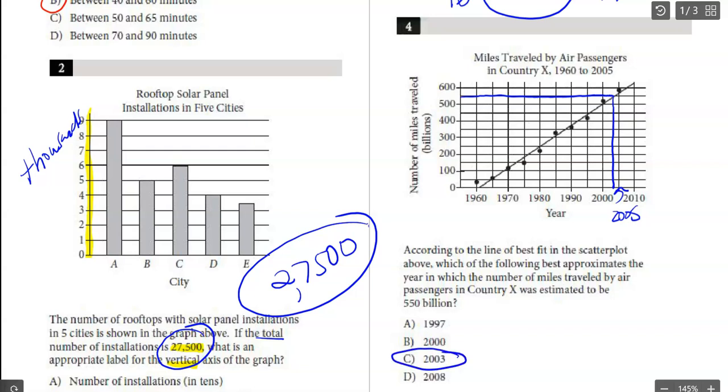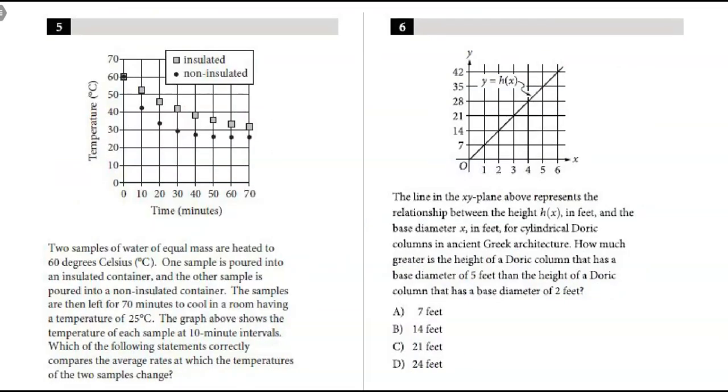All right, number five. It says two samples of water of equal mass are heated to 60 degrees. One sample is poured into an insulated container, the other is poured into a non-insulated. They're then left for 70 minutes in a room cooling. The graph above shows the temperature at which each sample at 10 minute intervals. Which of the following statements compares the average rates?